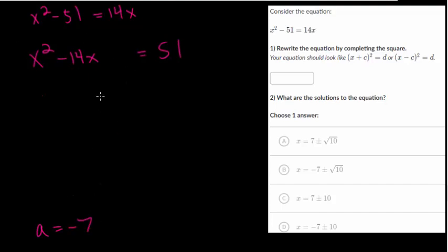So minus 7. And while you're doing these, I do encourage you to keep that formula by you until you feel like you have mastery of these. It's just nice to be able to reference that. So the number that we're going to add to each side is a squared. Minus 7 times minus 7 would be positive 49.